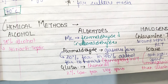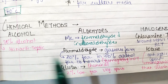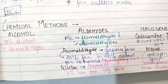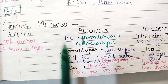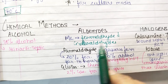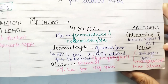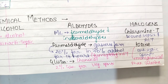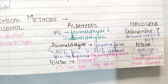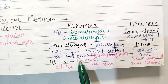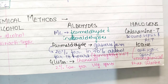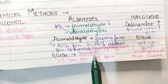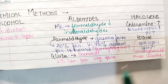For chemical methods, we have aldehydes, alcohol, and halogens. In alcohol, we use 70% alcohol as a skin antiseptic. For aldehydes, formaldehyde and glutaraldehyde are the most common. Formaldehyde in gaseous form is used as 20% formaldehyde in 70% alcohol for 18 hours for fumigation. Glutaraldehyde is used at 2% concentration and can destroy vegetative spores.